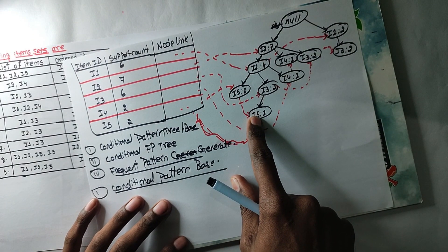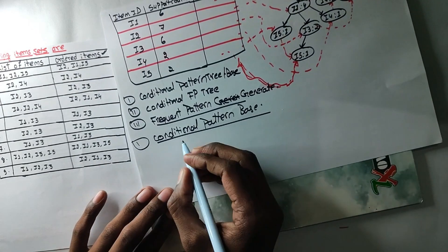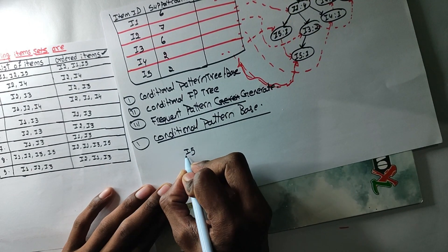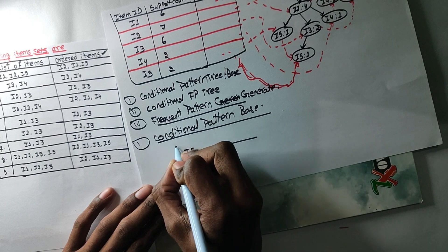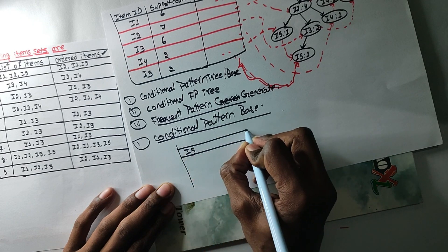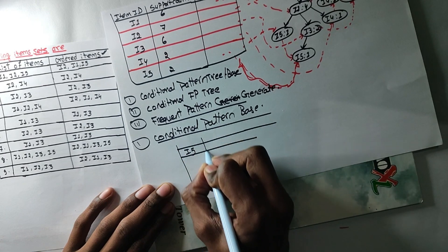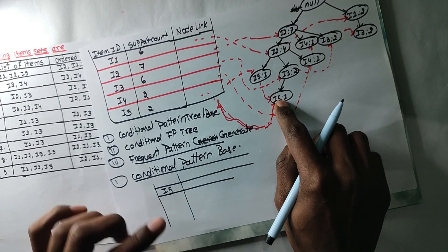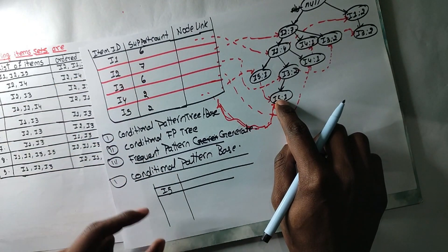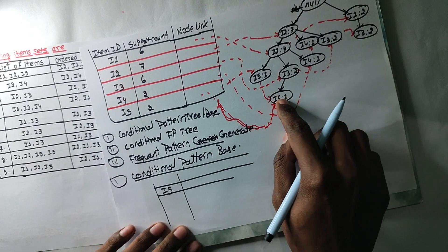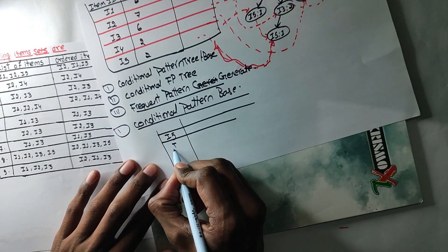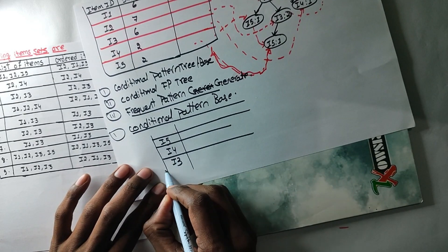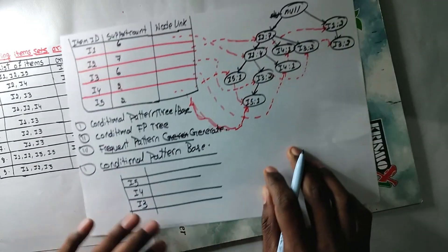I5 is the same. So we have to make I5. I5 is the table. That's the last one. We will get to the last one: 3, I4, 3, I3, 3, I3.